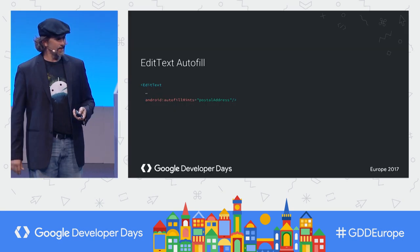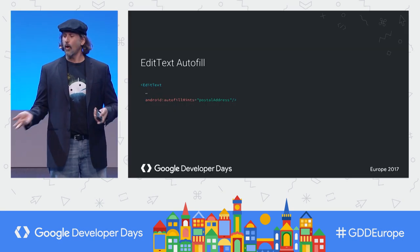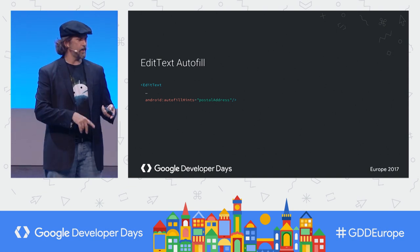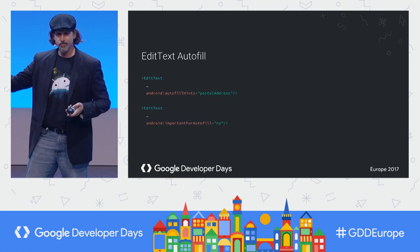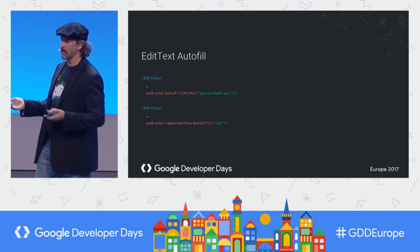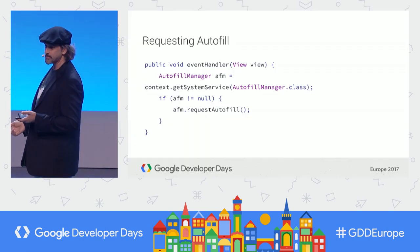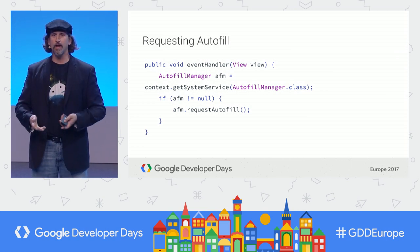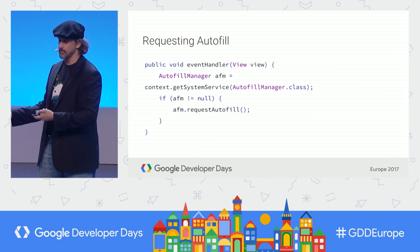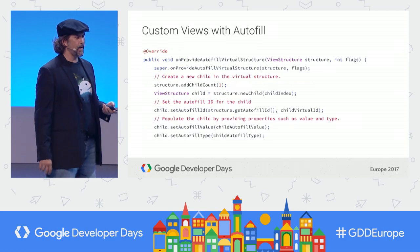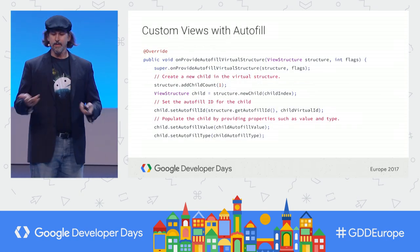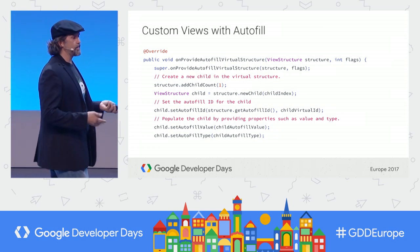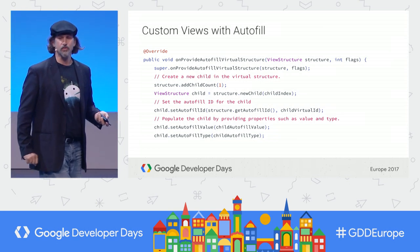Let's talk about autofill. Apps that use standard views automatically work with autofill. But you can help it do a better job by providing hints like postal address. You can also mark fields that autofill should ignore. You can integrate it more deeply — request autofill in your app and use autofill on completely custom views such as those drawn with OpenGL or Vulkan by providing an autofill virtual structure.